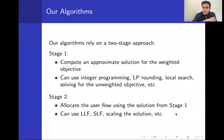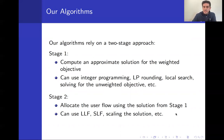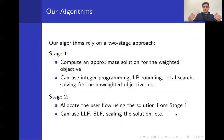Our algorithms use a two-stage approach. In stage one, we compute an approximate solution for the weighted objective. Since the weighted objective is not convex, the exact optimum cannot be computed, but approximate solutions can be obtained via integer programming, LP rounding, local search, or solving the unweighted objective and using that solution. In stage two, we allocate the Stackelberg user flow using the stage one solution with strategies such as largest latency first, shortest latency first, or scaling.